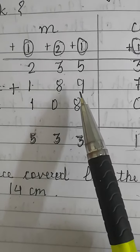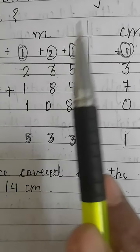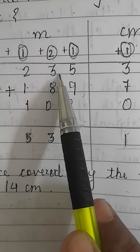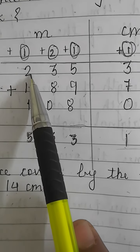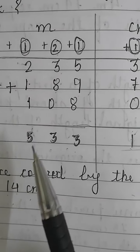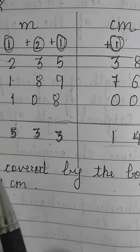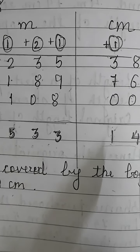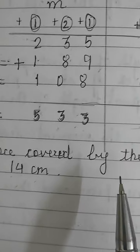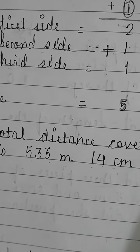Now let's add the meters column. 8 plus 9 is 17, plus 5 is 22, plus 1 is 23, write 3 carry over 1. Then 0 plus 8 is 8, plus 3 is 11, plus 2 is 13, write 3 carry over 1. Finally 1 plus 1 is 2, plus 2 is 4, plus 1 is 5. So the total is 533 meter 14 centimeter. Hence the total distance covered by the boy in one round is 533 meter 14 centimeter.